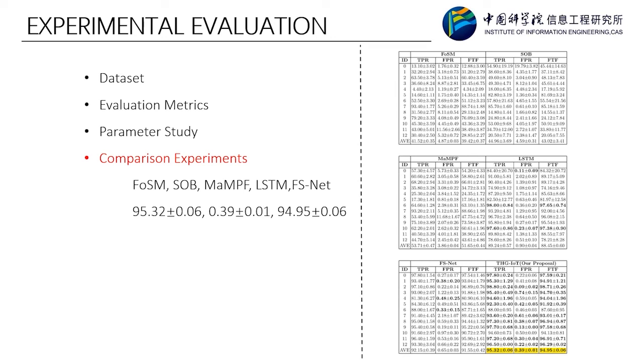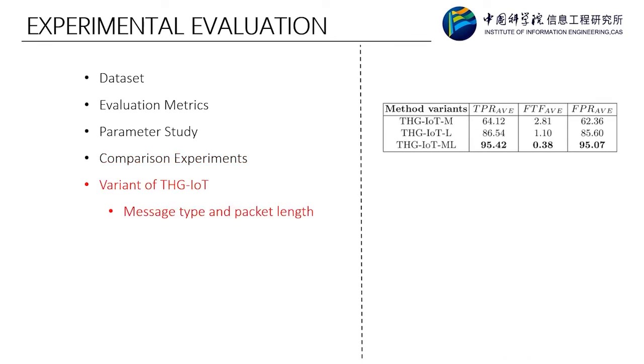We also discuss some variants of THG-IoT. Message type sequences and packet length sequences are used as the critical input to characterize the flow. To facilitate comparison and analysis of the performance of different input sequences, we set up three variants for different input sequences and named them M, L, and ML. The results of the experiment are shown in the table. It can be seen that the performance of the combined sequence method is much higher than the single sequence solution.